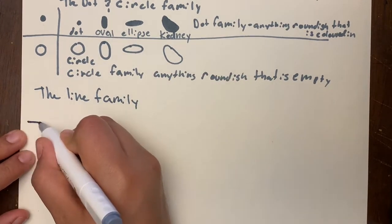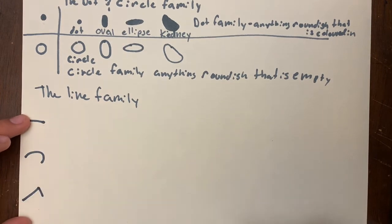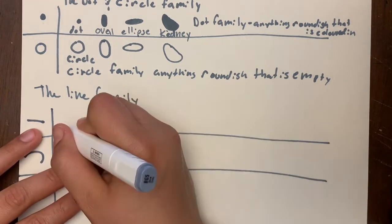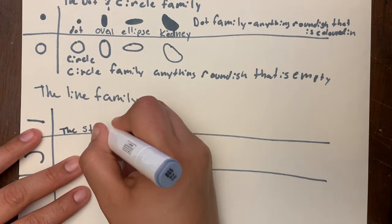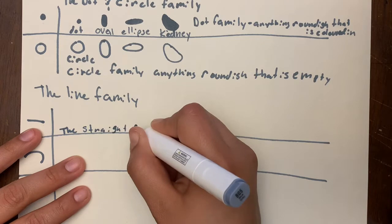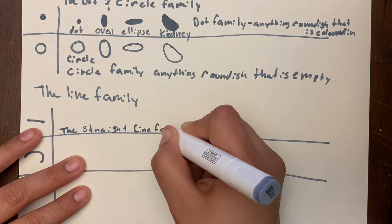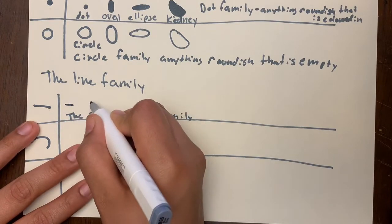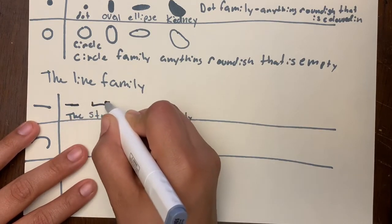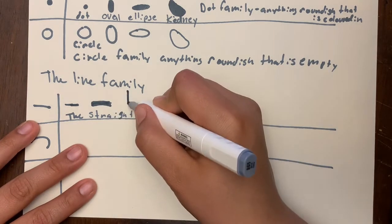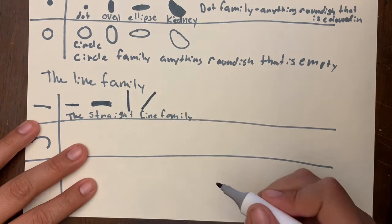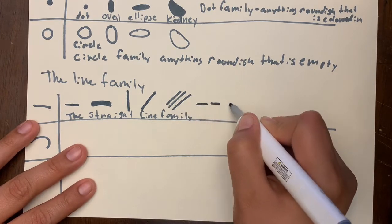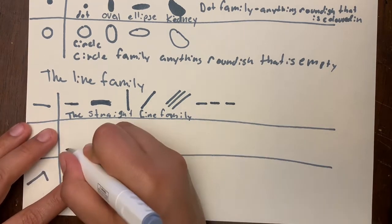First up is the straight line family. It can be a long line — that is a horizontal line — a nice thick line, a vertical or diagonal line. We can have multiple lines next to each other, or little dash lines. It is still a line.